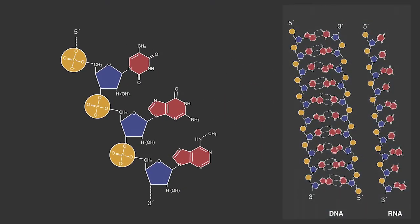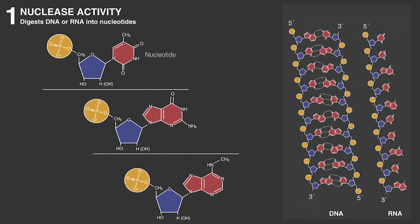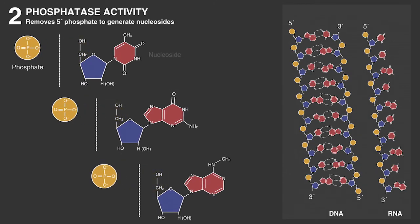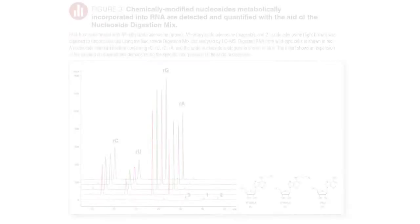In the first step, genomic or synthetic DNA or RNA is converted into individual nucleotides by the mixed nuclease activity. In the second step, the nucleotides are dephosphorylated by the action of a nonspecific phosphatase.